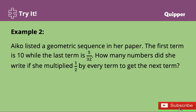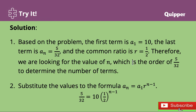Example number 2: I co-listed a geometric sequence in her paper. The first term is 10, while the last term is 5 over 32. How many numbers did she write if she multiplied 1 half by every term to get the next term? Based on the problem, the first term, or a sub 1, is equal to 10; the last term, or a sub n, is equal to 5 over 32; and the common ratio is equal to 1 half. Therefore, we are looking for the value of n, or the number of terms.